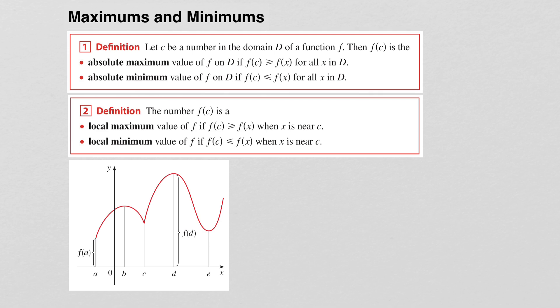We have another type of maximum and minimum. f of c is a local maximum of a function f if f of c is bigger than f of x when x is near c, and it's a local minimum when f of c is less than f of x when x is near c.